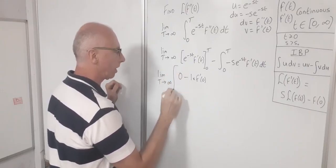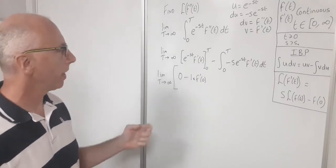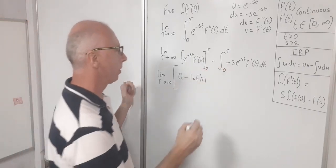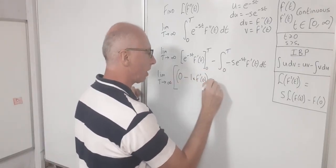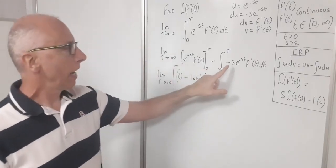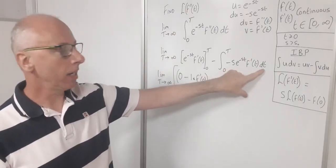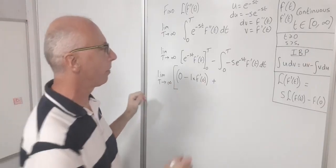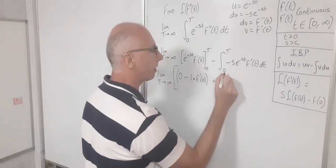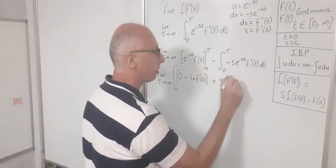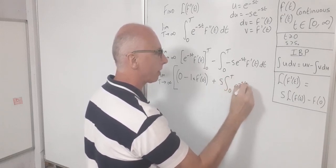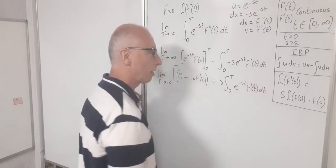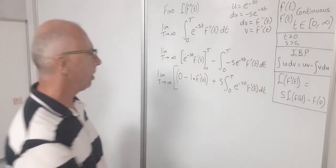Let's tidy this up. The two minus signs give a plus, so we have the result in brackets, and then plus s — since s is not in the integration parameter it comes out front — times the integral from zero to t of e to the minus st times f prime of t dt.